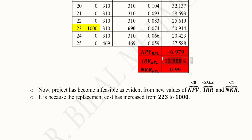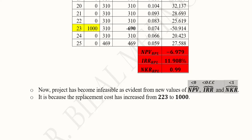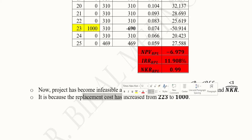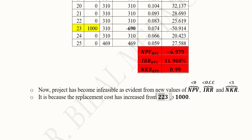Now you can see the NPV is negative. The IRR is also present but it is less than 12 percent — if the opportunity cost of capital is 12 percent, then this means the project is not desirable from the IRR criterion. The NKR is also showing the same situation, as it is less than one, meaning the project is not acceptable. All three measures indicate an undesirable outcome, and this is because the replacement cost increased from 223 to 1000.